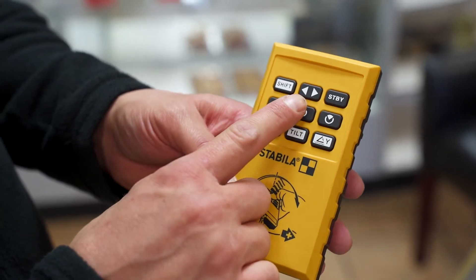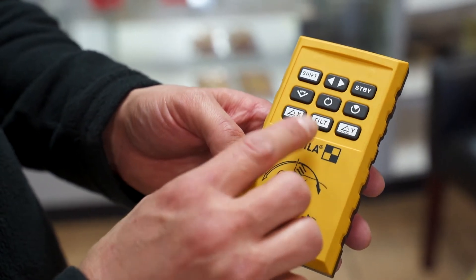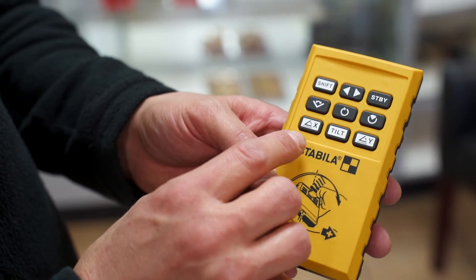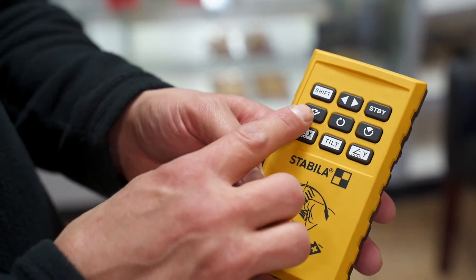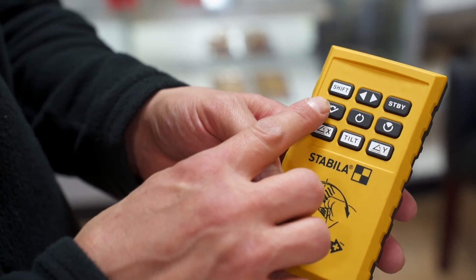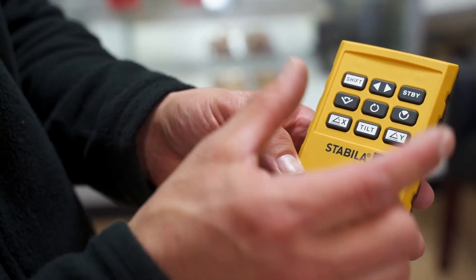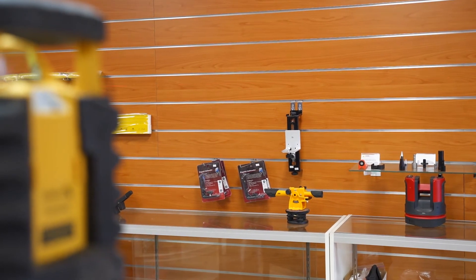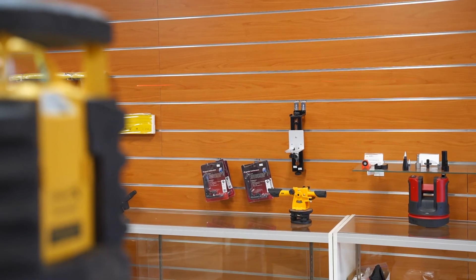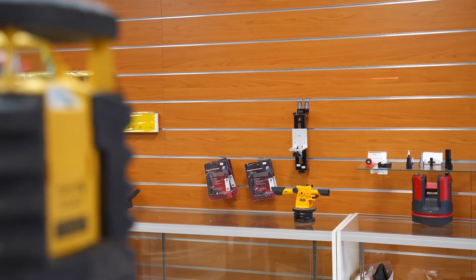What you have on the controller here are these arrow function buttons. What this is used in conjunction with is if you're either in scan mode or masking mode. In scan mode, we're concentrating that laser line from spinning 360 just down to a smaller concentrated area for higher lighting conditions where you can't see it. You would engage the scan and then you would use these arrows to move that laser line around the room.